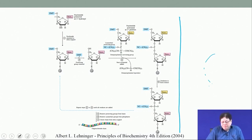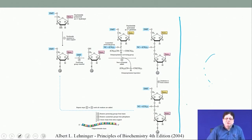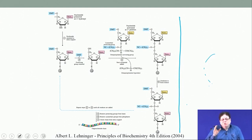Once the protecting groups are placed on the functional groups — either the amine of one component and the acid of the other component — then the remaining amine and acid functionality of the two amino acids are coupled. That is called the coupling stage. So basically there are three stages: protection, coupling, and then deprotection.